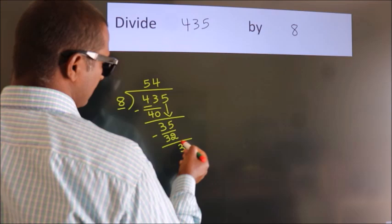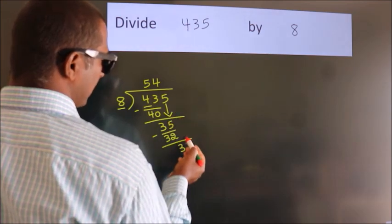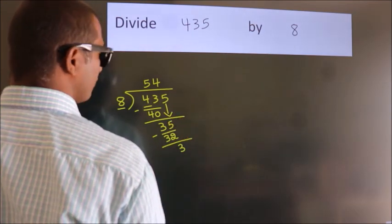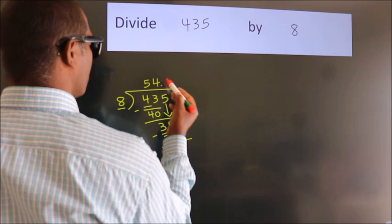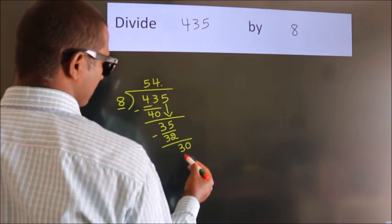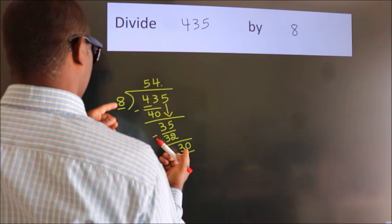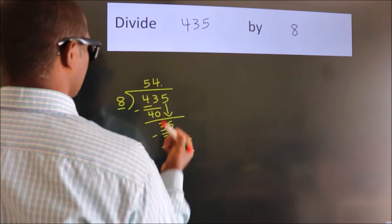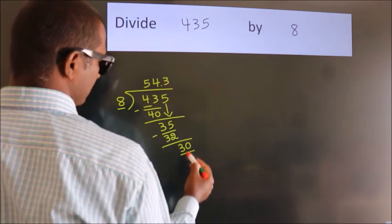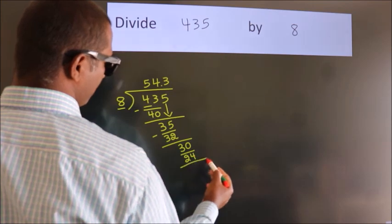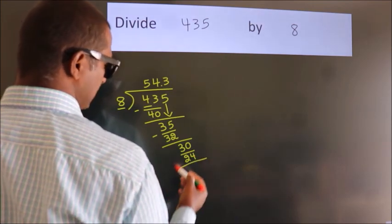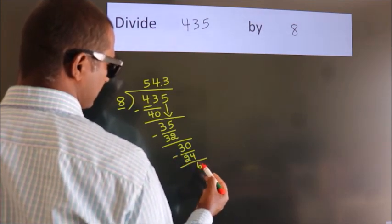After this, no more numbers to bring it down. So what we do is, we put dot take 0. So 30. A number close to 30 in 8 table is 8 threes 24. Now we subtract, we get 6.